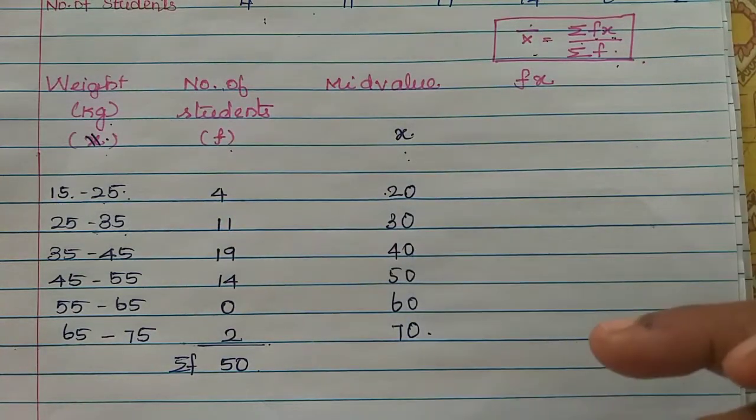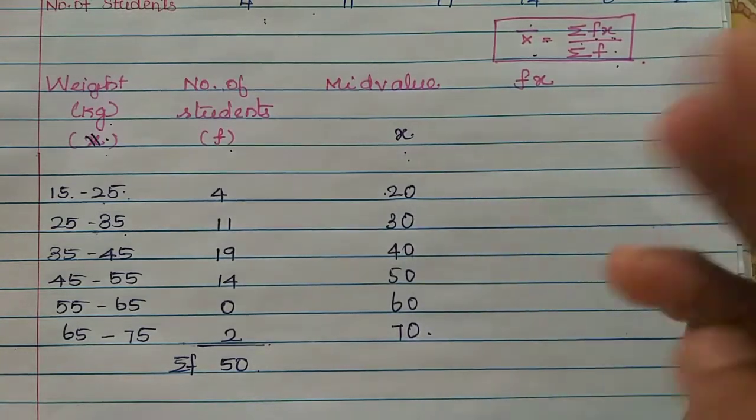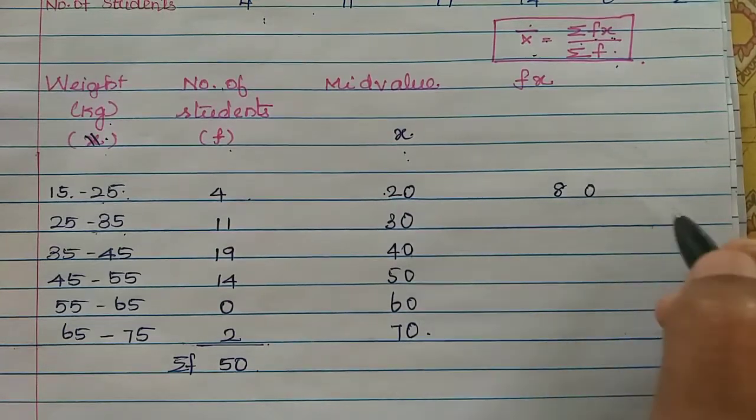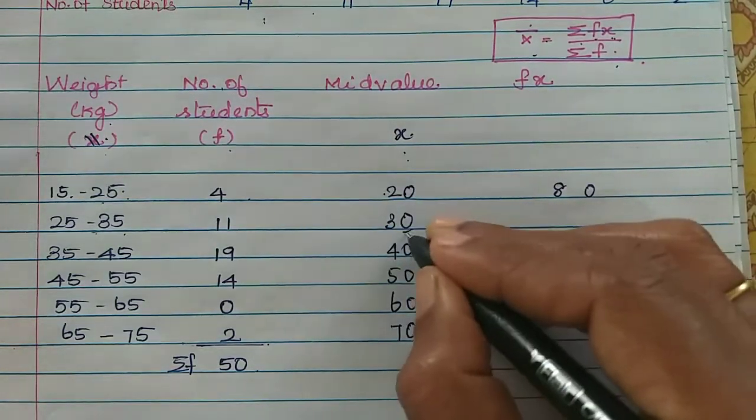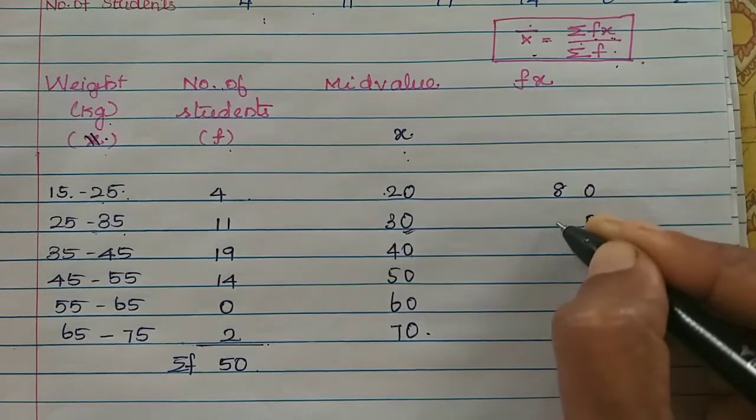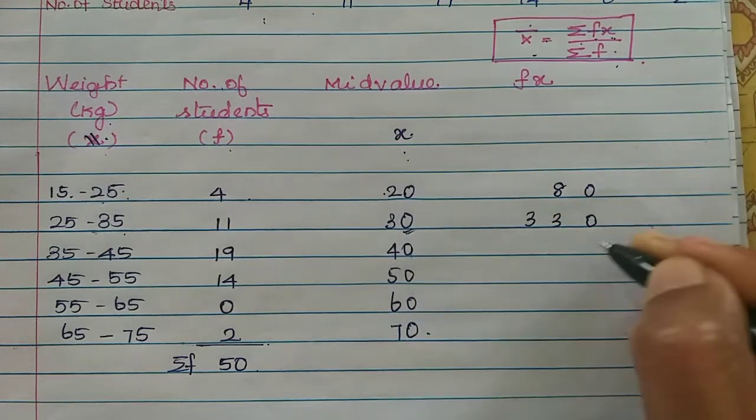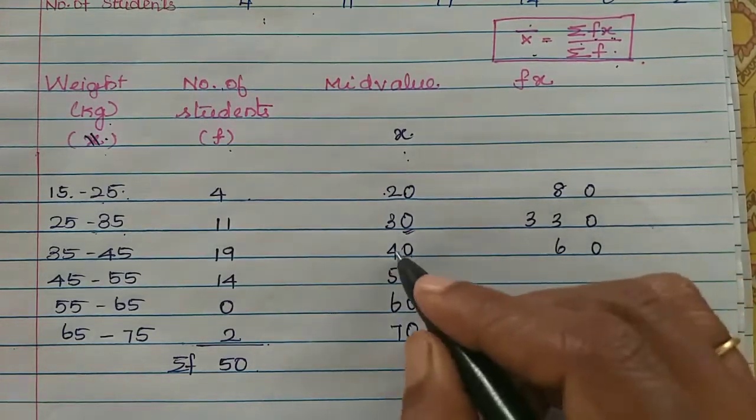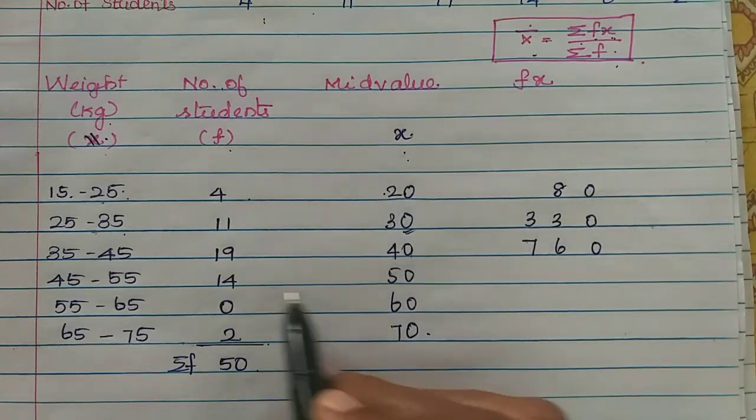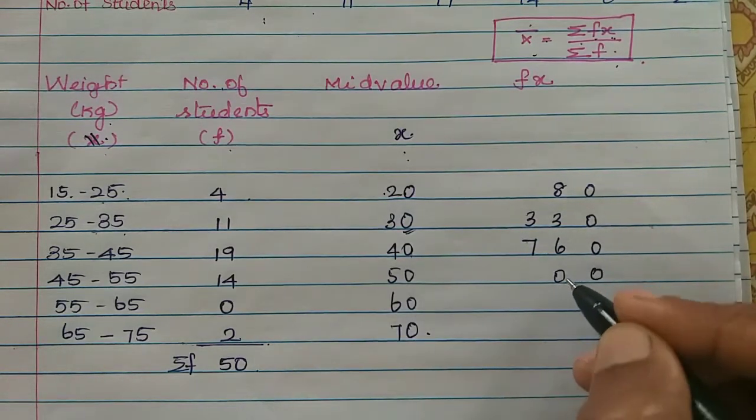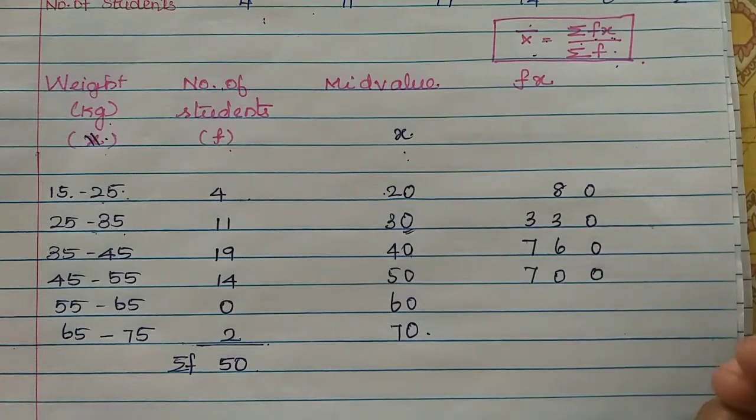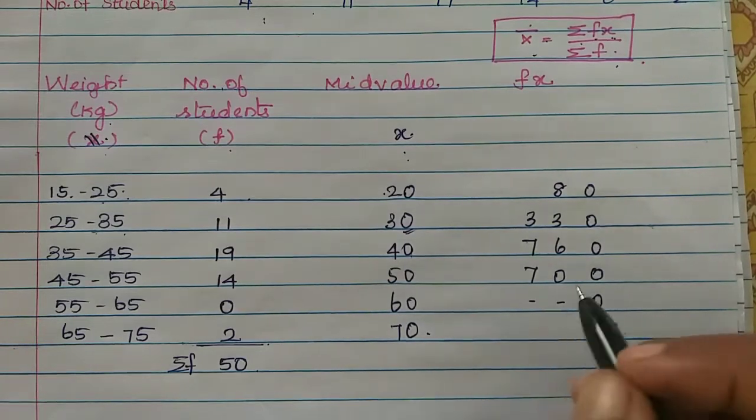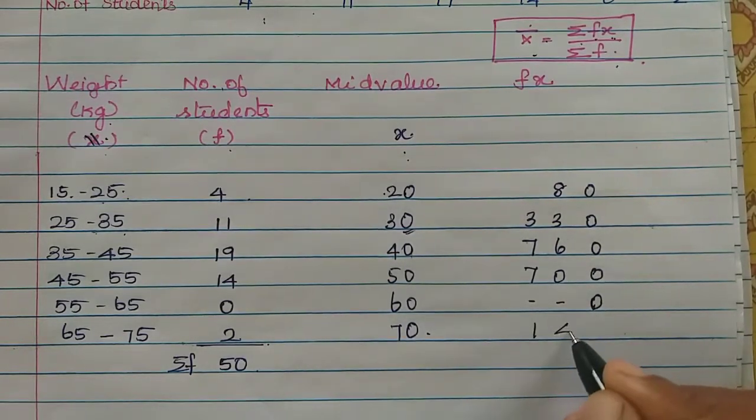We will calculate fx. If we add all this we will get sigma fx. 14 times 20 is 80. Then 11 into 30, 11 into 3 is 33, we put zero so 330. Then 19 into 40, 9 times 4 is 36, balance 3, then 7 so 760. Then 14 into 50, zero we put, 4 and 5 are 20, then 1 and 5 are 5 plus 2 is 7, so 700. 0 into anything is 0. Then 2 into 70 is 140.